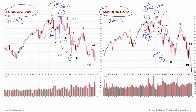Then we go into seven, which is an automatic rally. Eight is a spring-type event. This event produces the best rally in 2008, into nine, which becomes an upthrust again. We called the spring, we called the test, we called this the best rally.